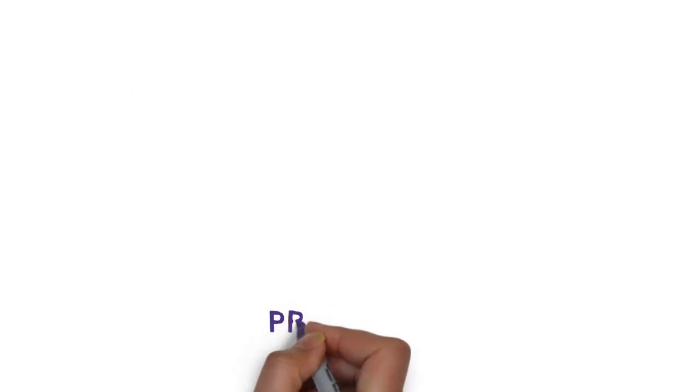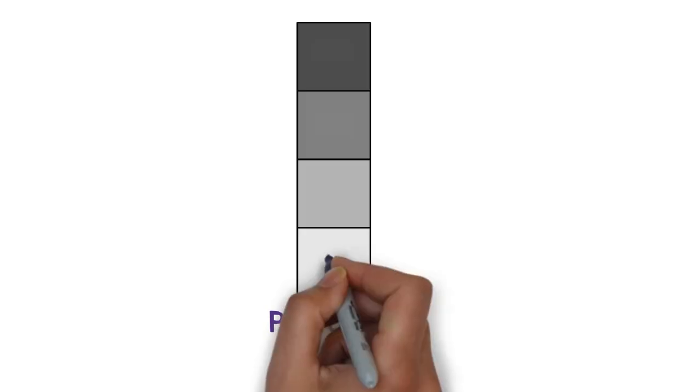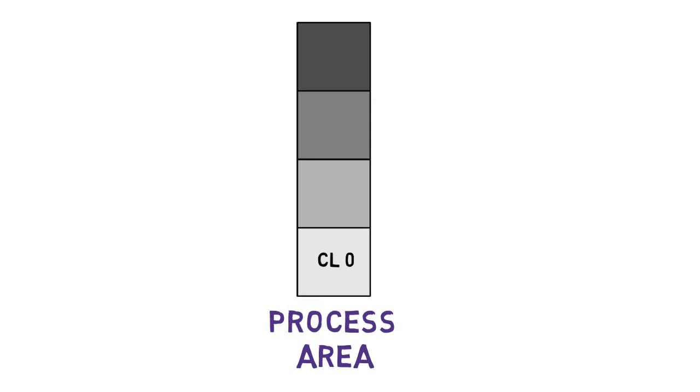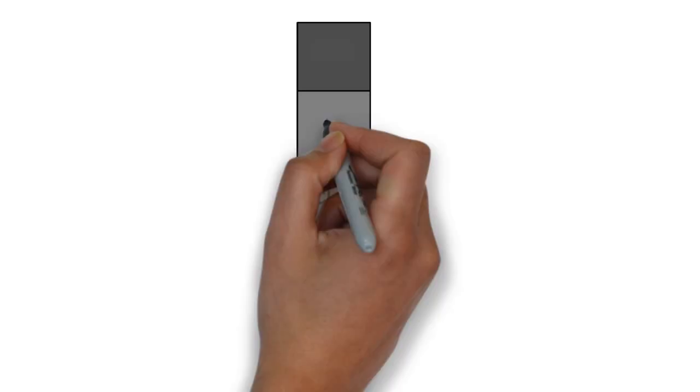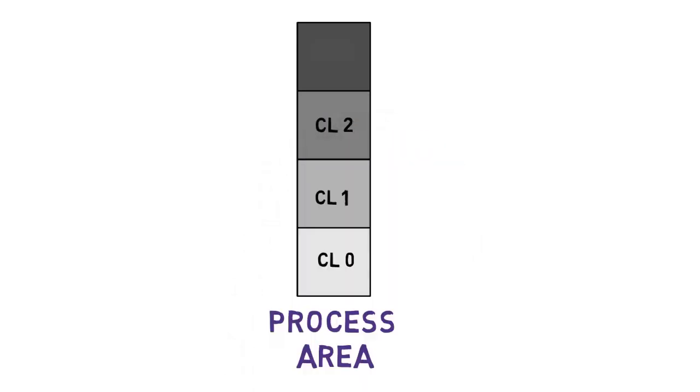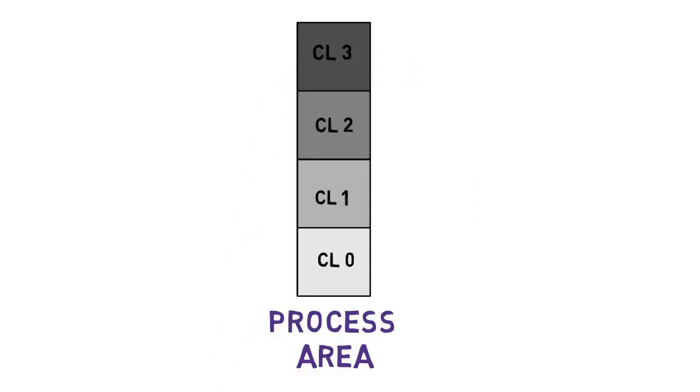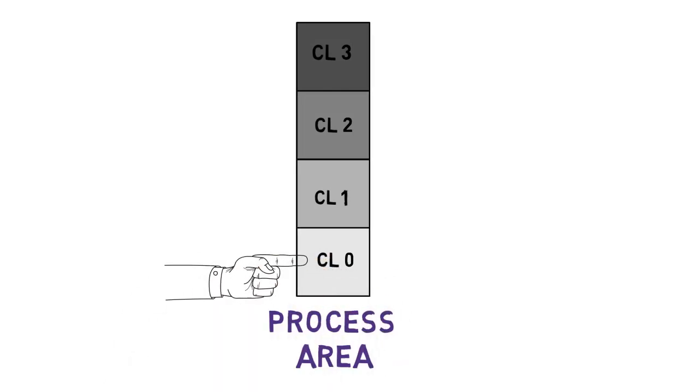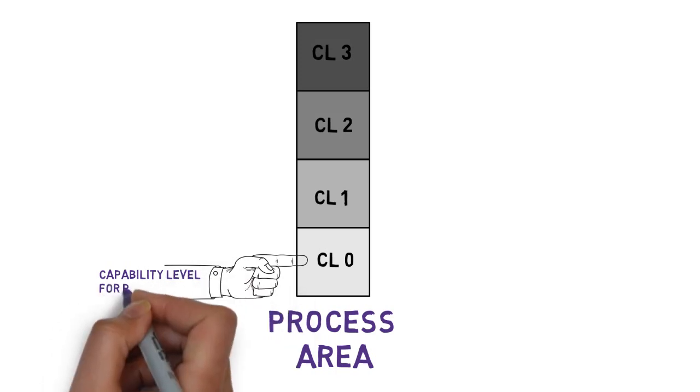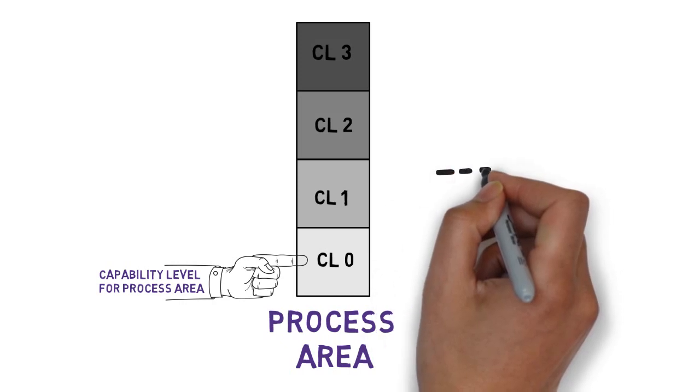Now the second way of viewing the model, choosing a subset of process areas to work on, is called the continuous representation. This view exists because not all organizations want or need to attain a maturity level, because not all organizations do their own work, outsourcing instead, and because some organizations want to solve some immediate problems before going further in their improvement initiative. In the continuous representation, we talk about the capability of a process area, rather than the maturity of a set of process areas working together. Both views work, and they complement each other.